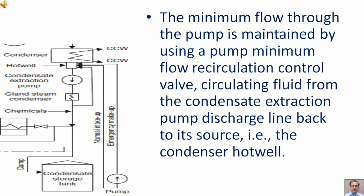This is the recirculation line and the recirculation control valve is located on this line. The minimum flow through the pump is maintained by using a pump minimum flow recirculation control valve, circulating fluid from the condensate extraction pump discharge line back to its source — that is, the condenser hot well.